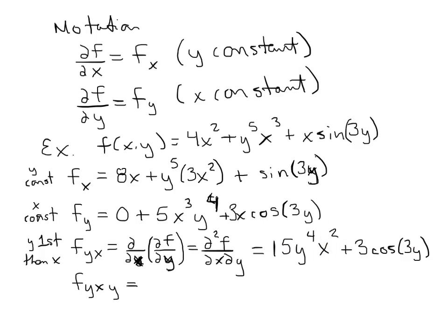We can even take a third partial derivative — take what we just found and differentiate with respect to y. Now x is constant: the 4 comes down in front of y, giving 15·4 = 60 times x² times y³. For the cosine term, x is constant, the derivative of cosine is negative sine, and we get another factor of 3 out front. You can keep picking different variables to differentiate — just keep one variable constant while taking the derivative of the other.